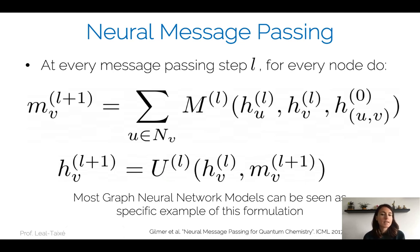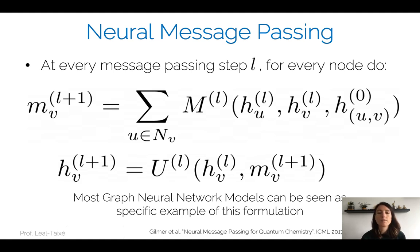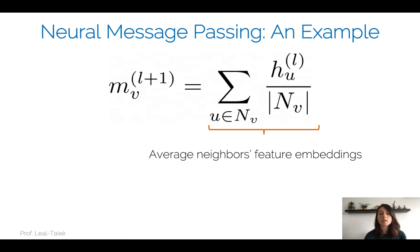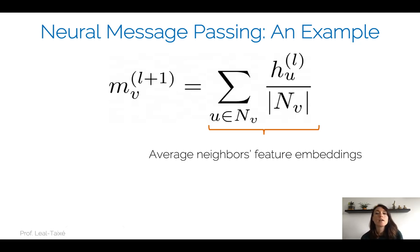There are a lot of graph neural network types and models — graph convolutional neural networks, message passing networks — but most of them can be seen as a specific example of this general formulation. We're going to see a couple of these examples in this lecture. Let's see a first example with a specific definition for the message passing steps and the operations performed on our embeddings. The first step is the creation of the message: node V looks at its neighbors U and looks at all their embeddings.